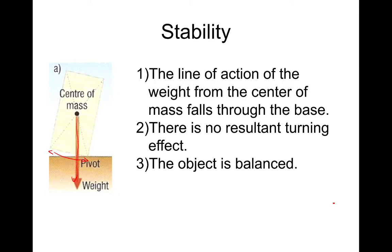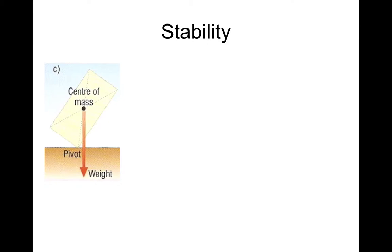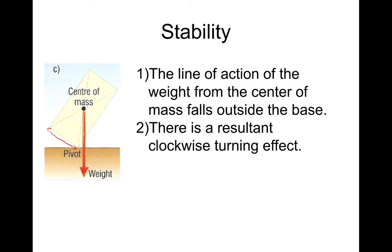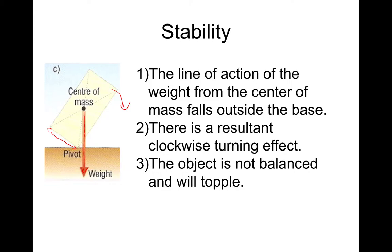Then there's a second scenario. Remember to pause if you want to make any notes. There's a second scenario, like this. So very similar to last time, basically the same, just a little bit different wording. As you can imagine, this is obviously going to topple over or fall over. And this is how you'd word it. You'd say the line of action of the weight from the centre of mass falls outside the base. Remember, this is the base. Therefore, there is a resultant clockwise turning effect. As you can see, this will topple in this direction. So clockwise. And the object is not balanced. And it will topple over.